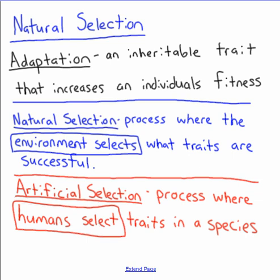Natural selection is the process where the environment selects which traits are going to be successful. It happens naturally out in the world — the environment is the selection pressure. This is different from artificial selection, where humans select the traits in a species that they think are successful.